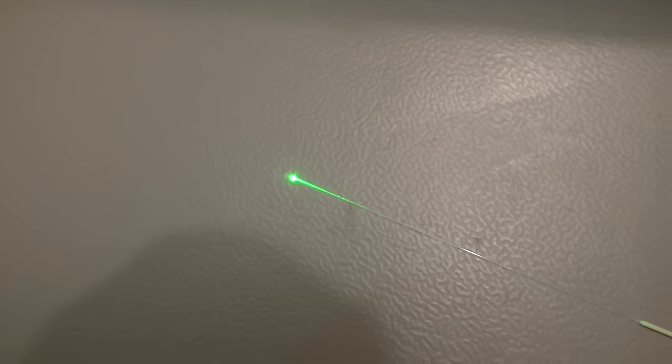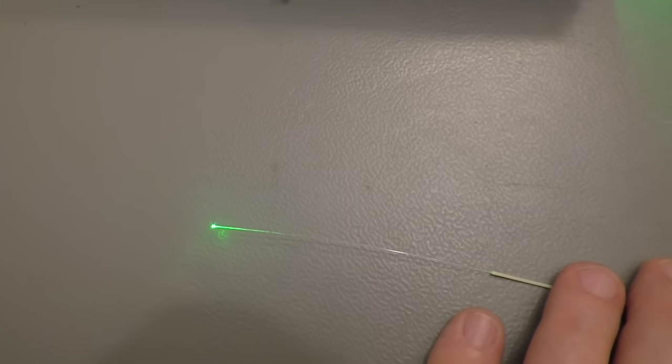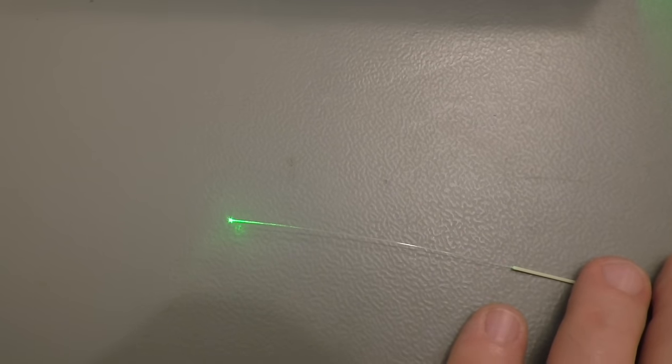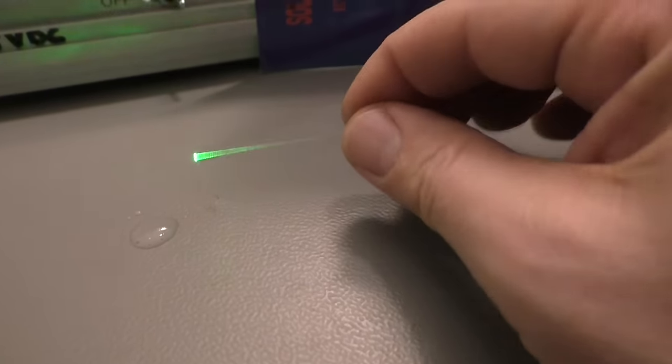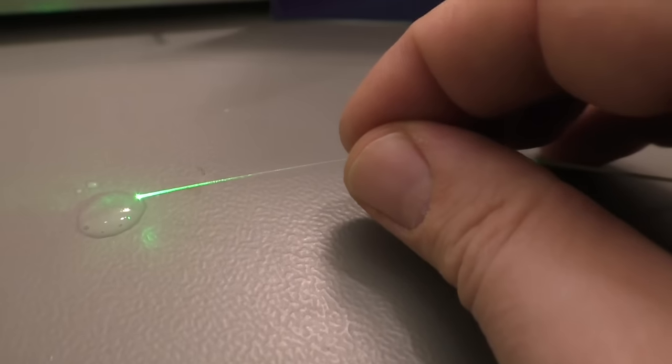Now as you can see the light exits at the end of the fiber. But the fiber itself seems also to glow. This is because much of the light is reflected at the end.